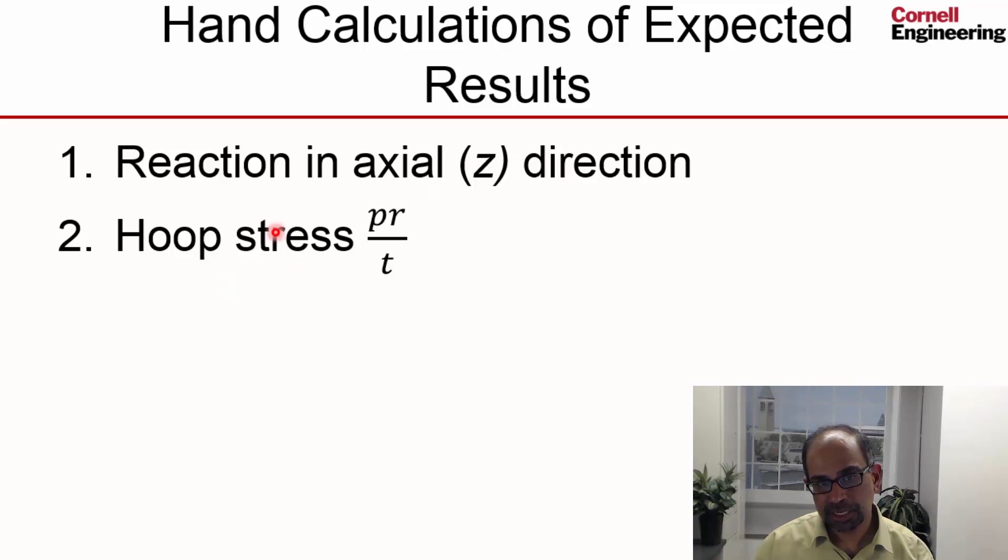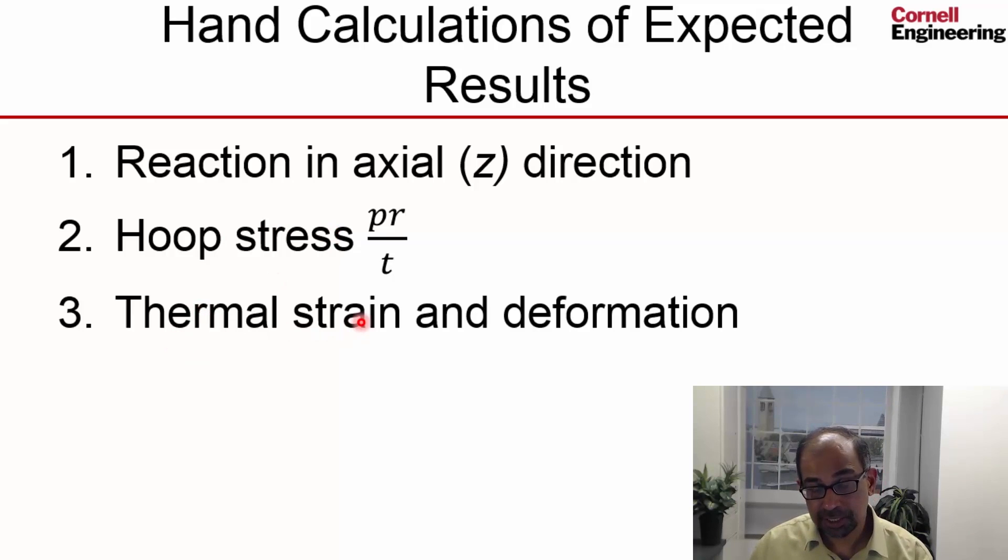We can estimate the hoop stress, that is the circumferential stress. We can estimate the thermal strain—this is an input into the model—and the resulting deformation, which we will get to later when we apply the thermal strain into the model.